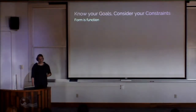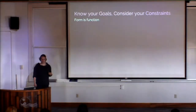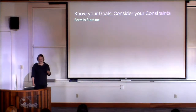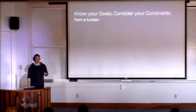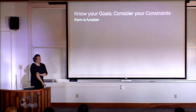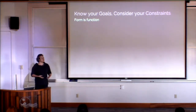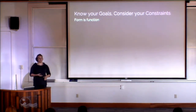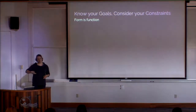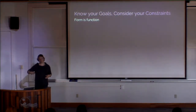I first want to talk about what I mean by knowing your goals and considering your constraints. In data viz, like in biology, form is function. I remember my AP biology teacher explaining that form is function — there's a relationship between how a thing is shaped and what it does. That is very true in data visualization as well. There should be a strong relationship between why you design something the way it is, what the goal is, and what the data is underneath it.